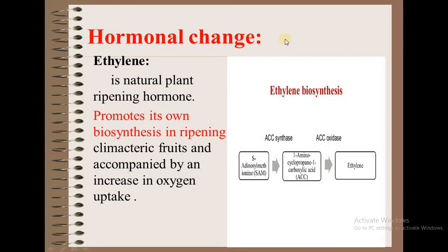Regarding hormonal changes, ethylene is a natural plant ripening hormone. It promotes its own biosynthesis and ripening in climacteric fruits, accompanied by an increase in oxygen uptake. In the ethylene biosynthesis pathway, the precursor is converted into 1-aminocyclopropane-1-carboxylic acid (ACC) by ACC synthase, and this ACC is then converted into ethylene by ACC oxidase.